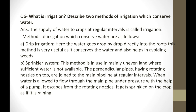The first method is drip irrigation. Here, water goes drop by drop — like a glucose drip — directly to the roots of plants. This conserves water and also helps avoid the growth of weeds. Water gets drop by drop directly into the roots, making this method very useful for water conservation.